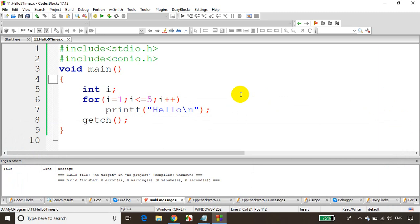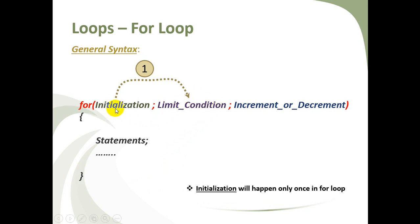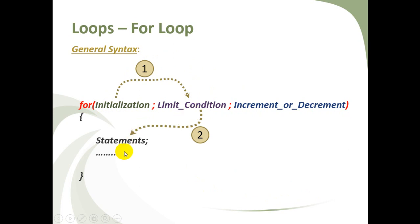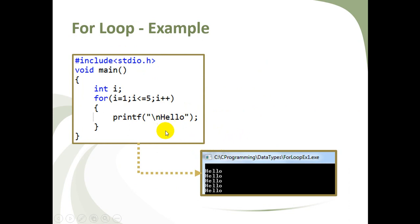I prepared a small presentation to illustrate how a for loop actually works. In the presentation: first initialization happens, then it checks the condition, then comes to the statements. Remember, initialization happens only once in the for loop. After statements are executed, it goes to increment or decrement, then checks the condition again. If satisfied, it loops through continuously. When the condition fails, it stops. This is the general flow of a for loop. Our example: for i equals 1, i less than or equal to 5, i plus plus — printing hello 5 times.